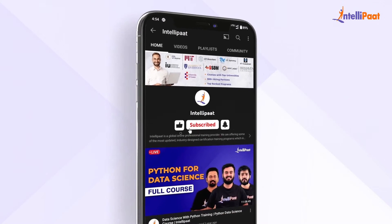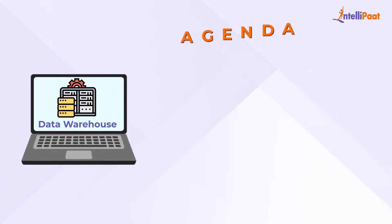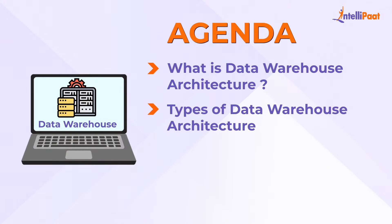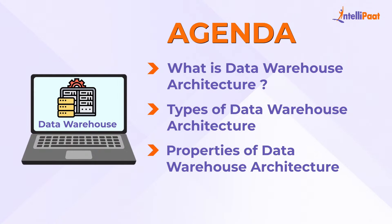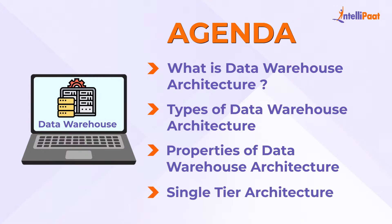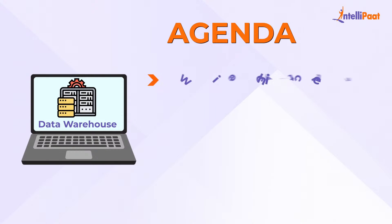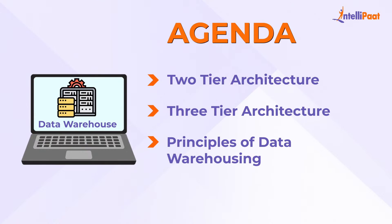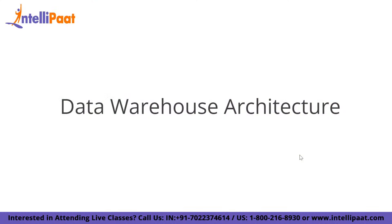First, we will discuss what is data warehouse architecture. Moving ahead, we will discuss types of data warehouse architecture, then properties of data warehouse architecture, followed by single-tier architecture, two-tier architecture, three-tier architecture, and finally the principles of data warehousing.